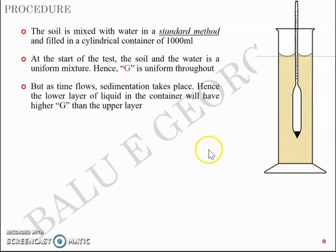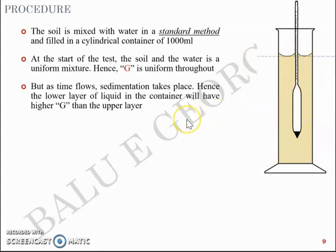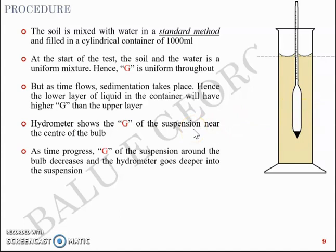But as time flows the sedimentation takes place, and hence a lower layer of liquid in the container will have a higher specific gravity than the upper layer. The suspension in the lower layers will be denser compared to the upper layers. The hydrometer basically shows the specific gravity of the suspension near the center of the bulb.